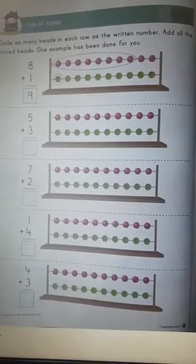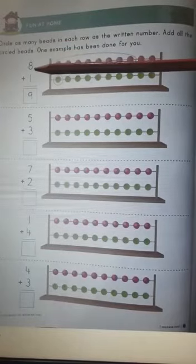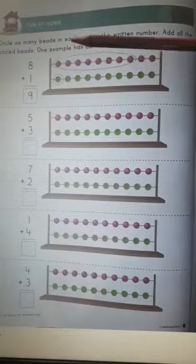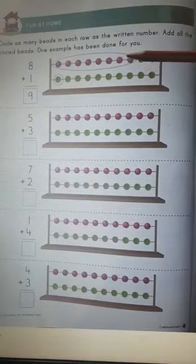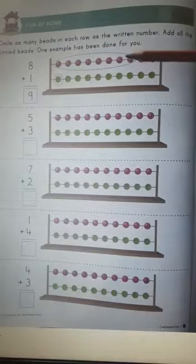Now look here very carefully. Which number is this? Number 8. So what we will do? We will circle 8 beads. 1, 2, 3, 4, 5, 6, 7, 8. We will circle 8 beads.